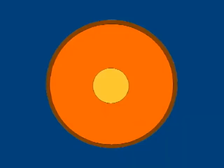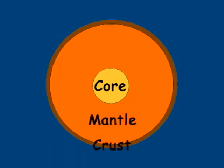The Earth consists of several layers. Among them are the core, the mantle, and the crust. The core generates great amounts of heat. Thus, the molten rock near the core is hotter than the molten rock near the crust, the surface of the Earth.